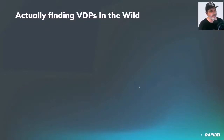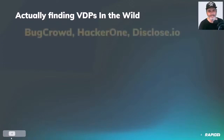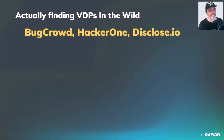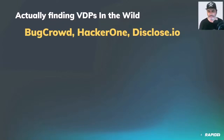Actually finding VDPs in the wild is not terribly hard. I look at a few things: BugCrowd, HackerOne, and disclose.io. I bring up BugCrowd and HackerOne because they're bug bounty platforms and it's in their interest to let you know that such-and-such a company has a bug bounty program — which is a species of VDP, not the only kind. Disclose.io runs a pretty nice community-sorted directory of vulnerability disclosure programs.